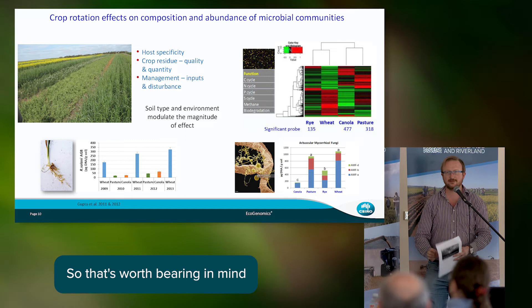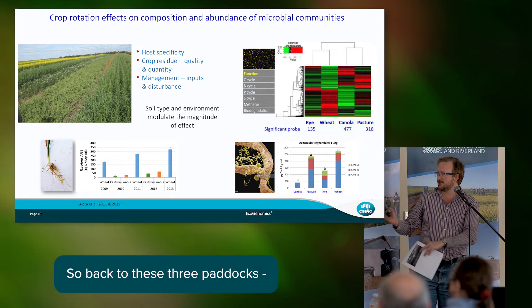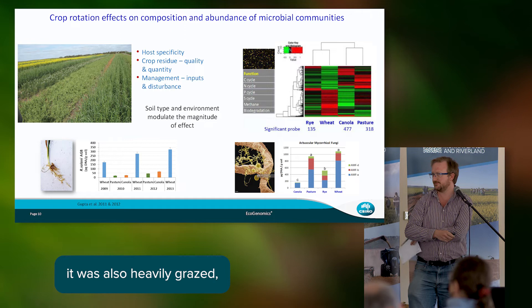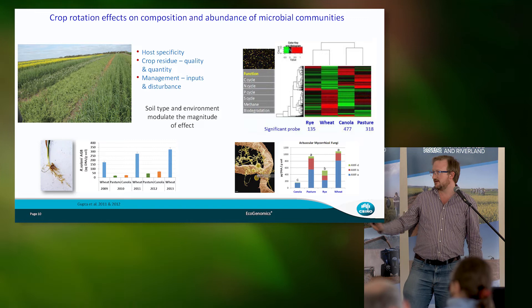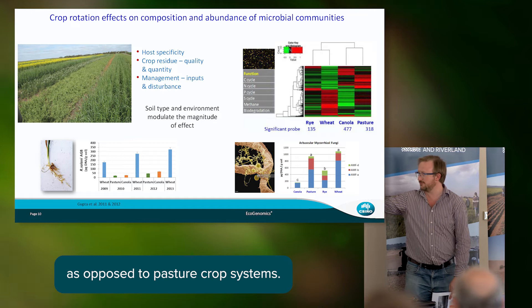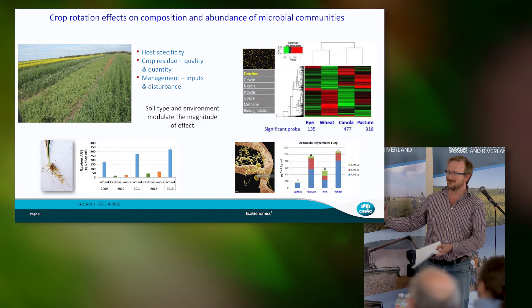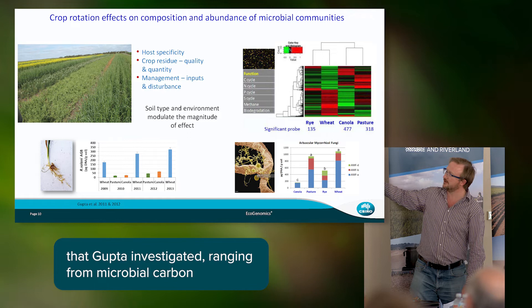Most of Australia is already performing well on this gradient - not just because gains are harder due to moisture, but because they've already been doing it far better than much of the rest of the world for a long time. Back to the three paddocks: the main difference in the top one, 7779, is that while stubble was retained it was also heavily grazed, whereas the other two paddocks had stubble that was either grazed slightly or not grazed at all. Paddock 8991 was continuous cropping as opposed to a pasture-crop system.